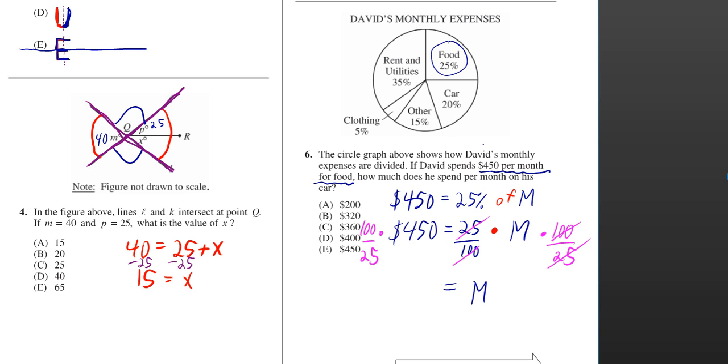The circle graph above shows how David's monthly expenses are divided. If David spends $450 per month for food, how much does he spend per month on his car?